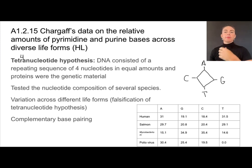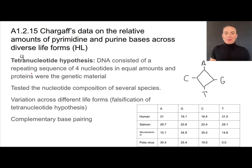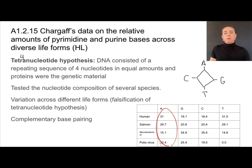Two main learnings came out of this experiment. First, the tetranucleotide hypothesis was not correct. Second, A and T were always found in relatively the same amounts, and so were G and C — giving rise to the idea of complementary base pairing. This is often referred to as Chargaff's rule: that A equals T and G equals C. The amount of each base differs between organisms — that's the diversity — but the unifying theme is that in every organism, A equals T and G equals C because they are always paired together.